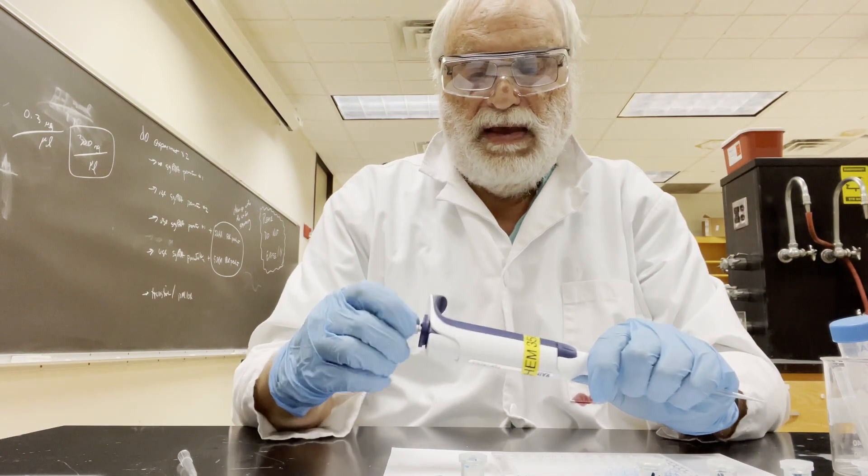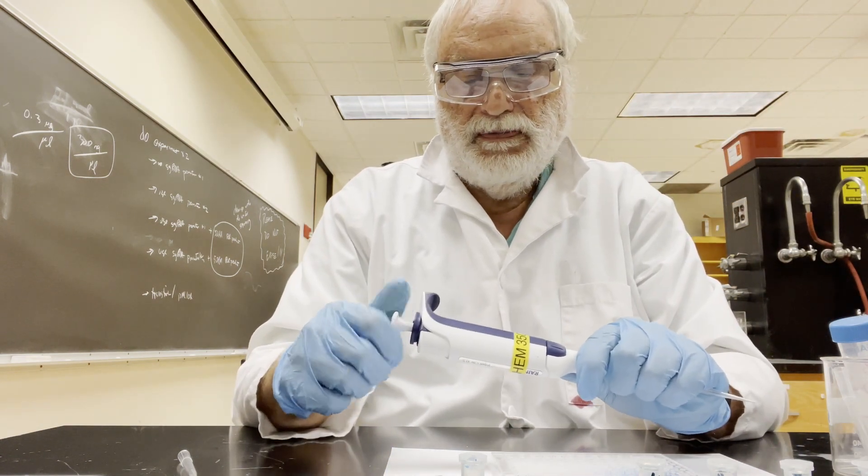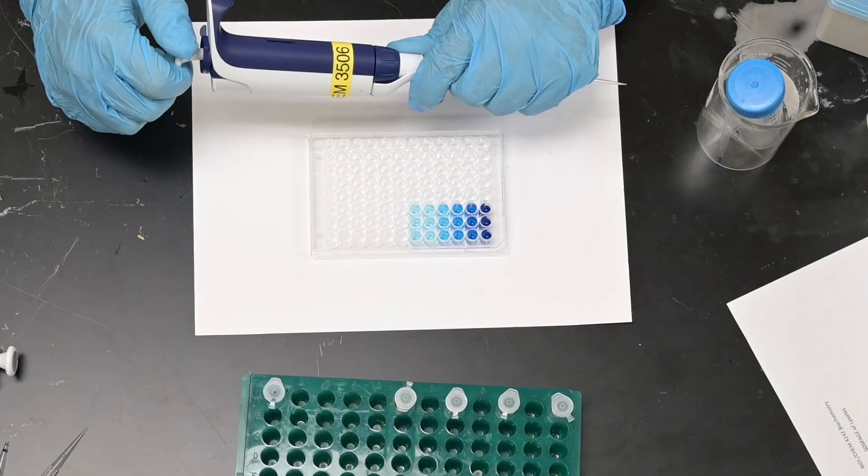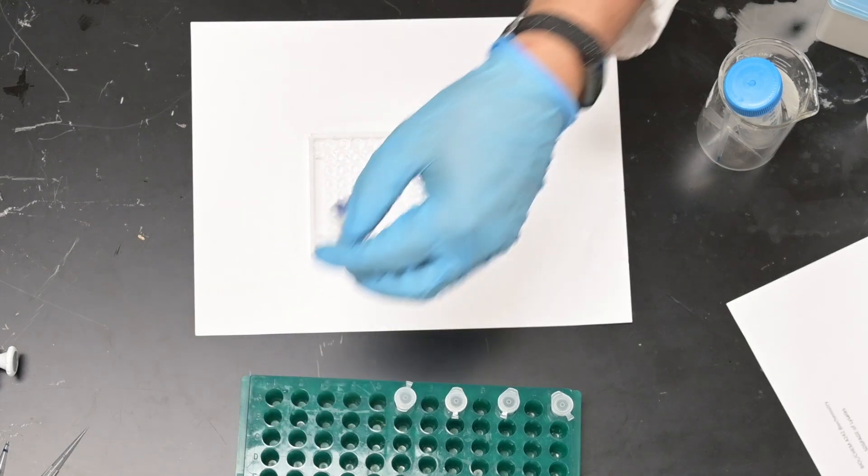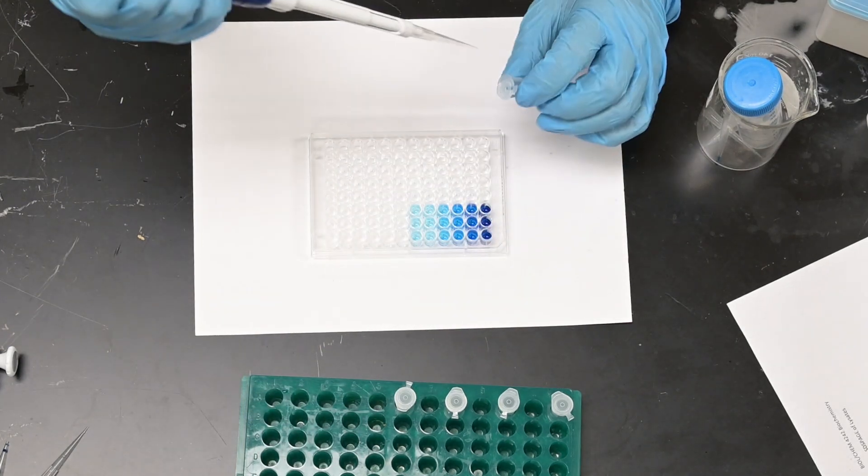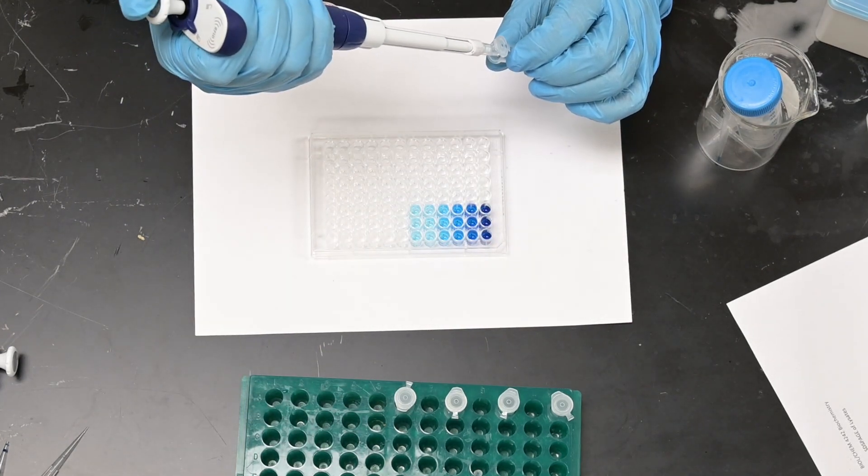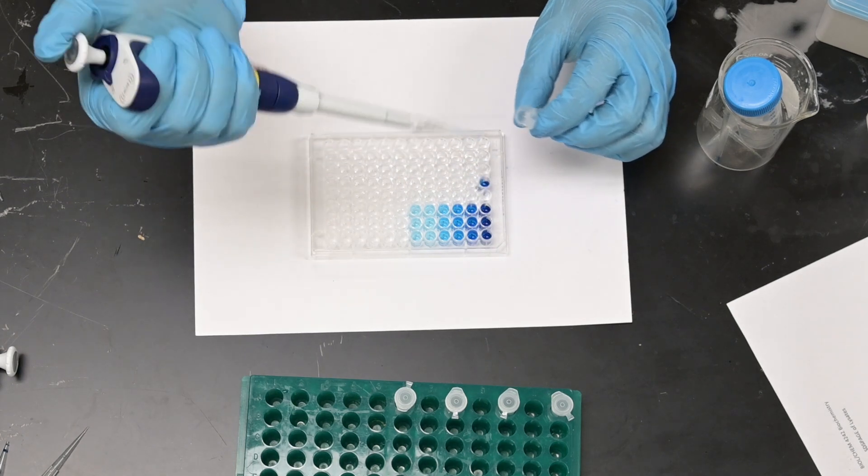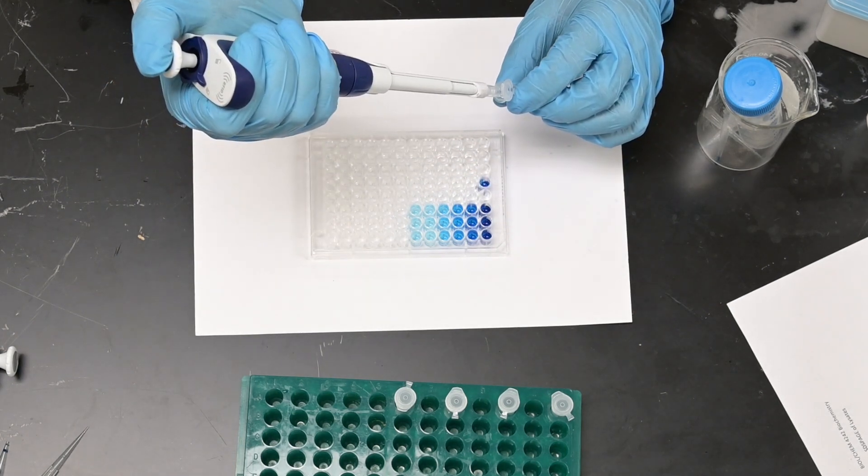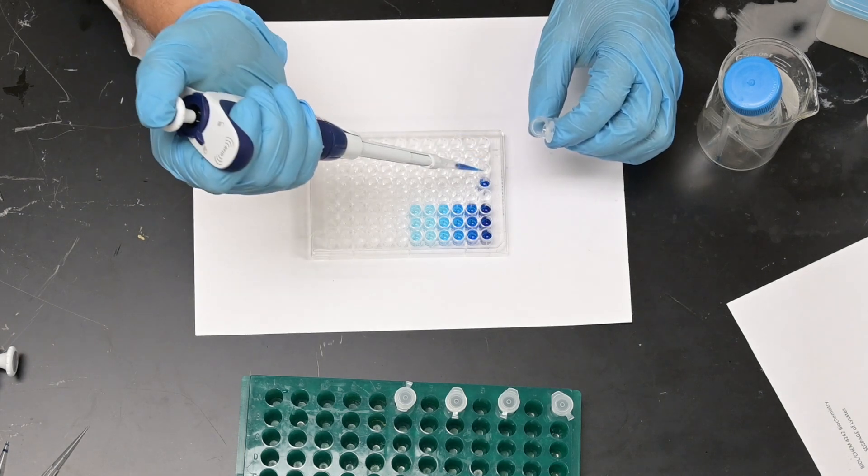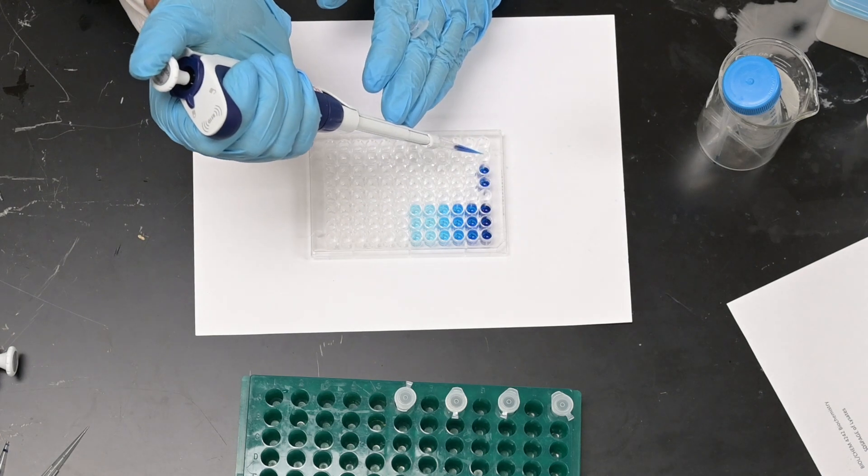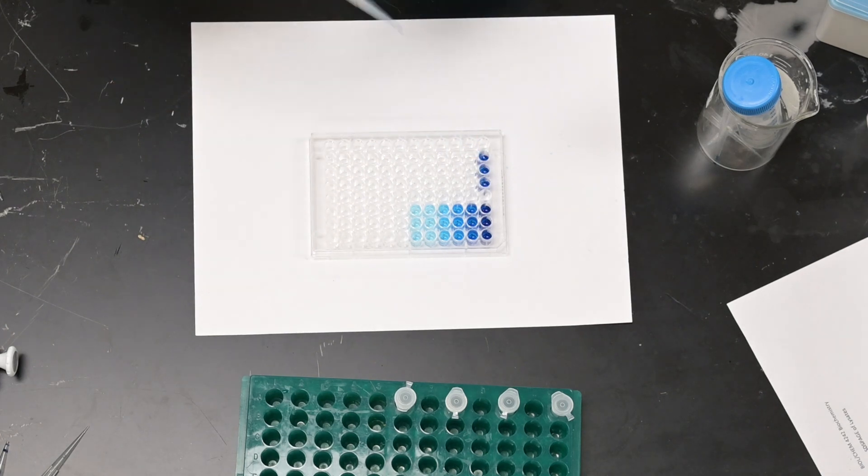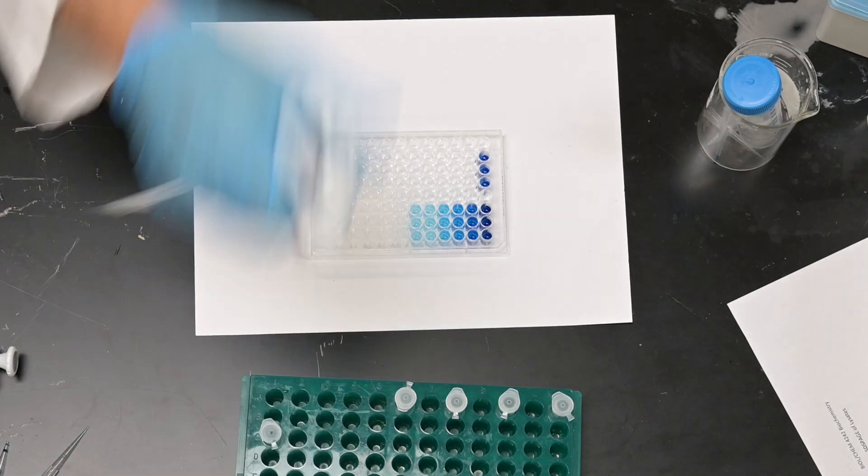I'll set the pipette for 150 microliters. We'll take the blue dextran one percent solution here and add that to E1, F1, and G1. I'll put that tube off to the side.